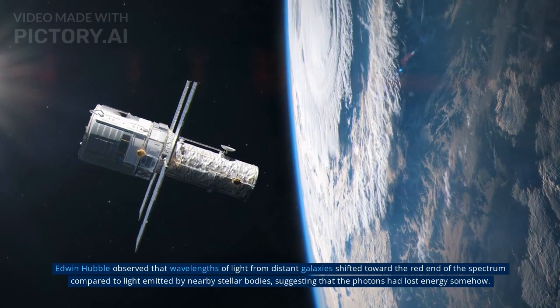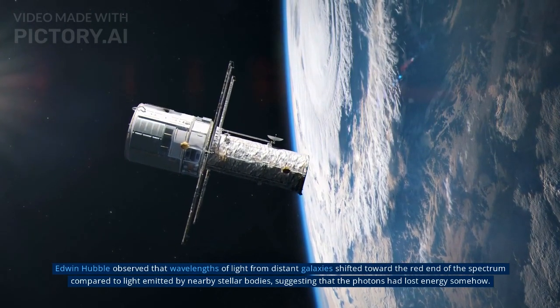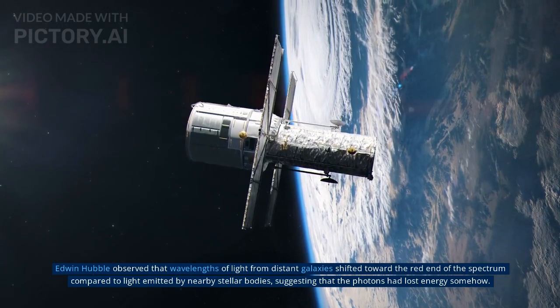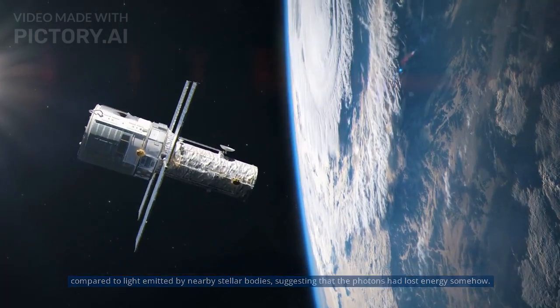2. Tired Light. Edwin Hubble observed that wavelengths of light from distant galaxies shifted toward the red end of the spectrum compared to light emitted by nearby stellar bodies, suggesting that the photons had lost energy somehow.